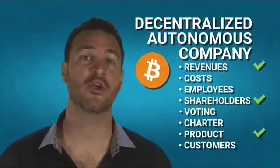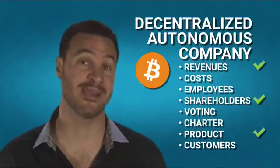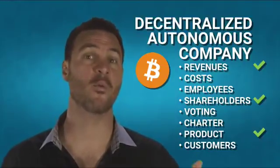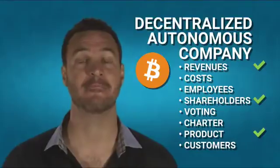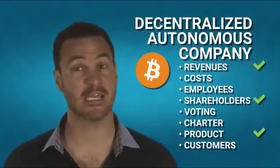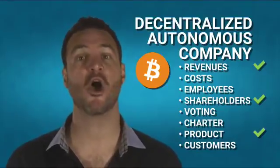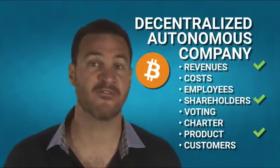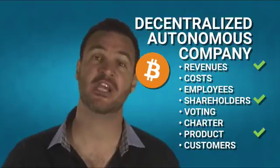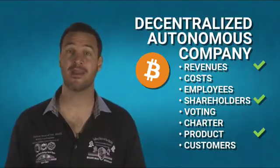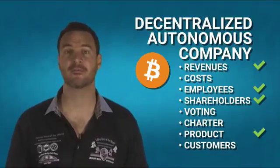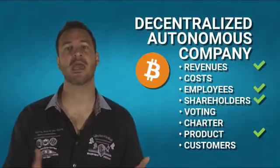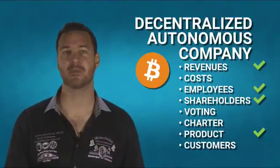Let's say you own 1% of all Bitcoin in existence. That is like owning 1% of stock in the Bitcoin company. As the company grows, hopefully the share price goes up. If the company shrinks or fails, then the share price might drop. Bitcoin has employees — they are called miners. Miners secure the network and facilitate these payments.